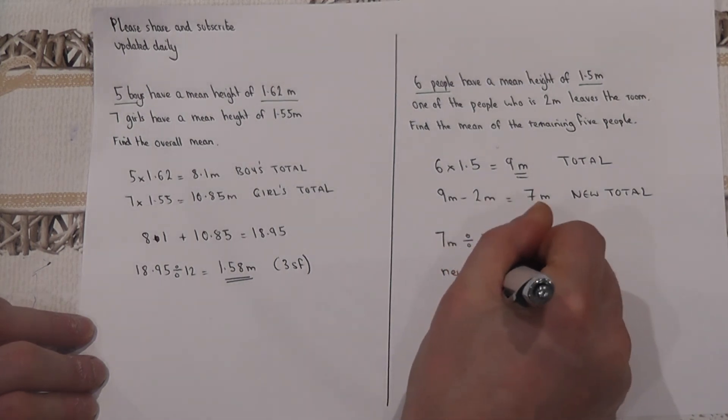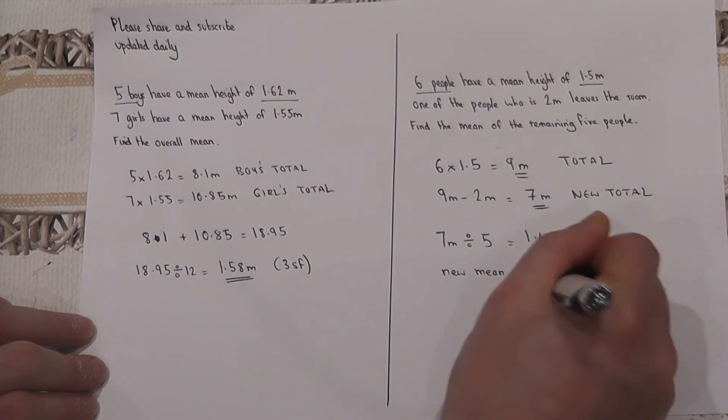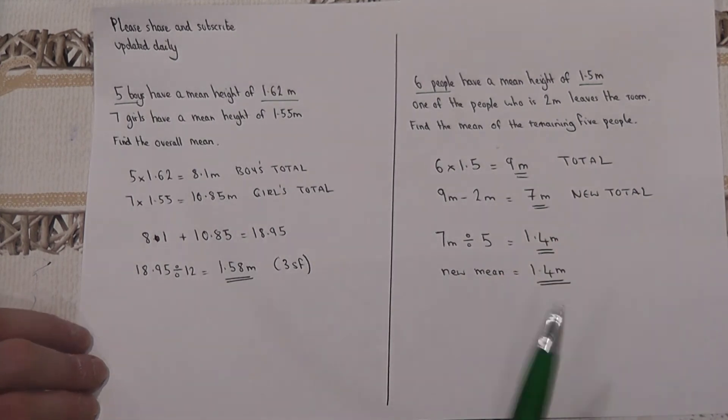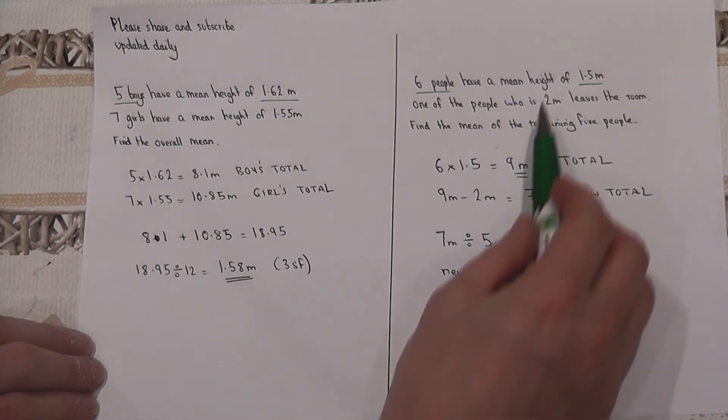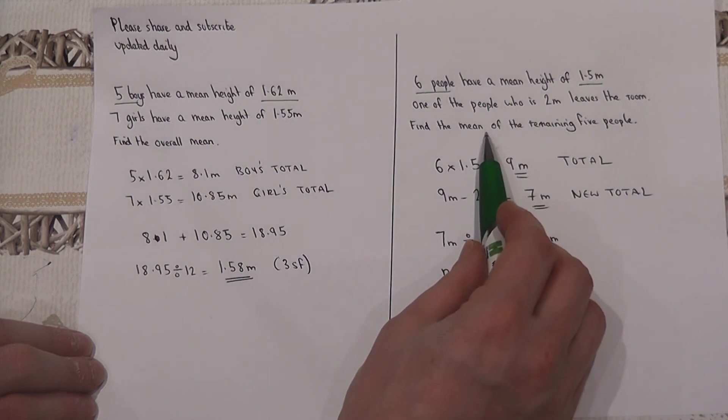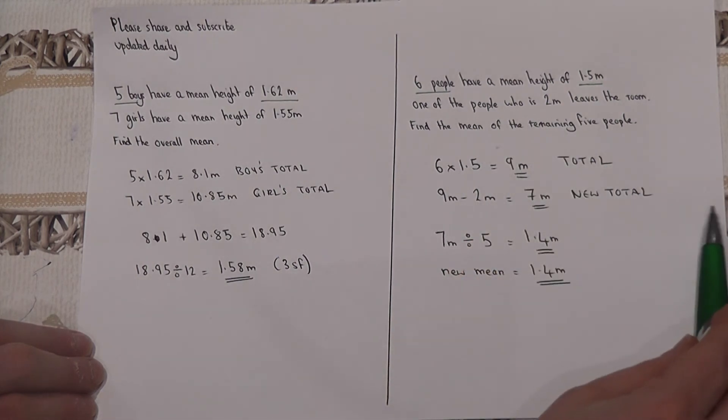So again we found the total, we took away the two meters, and we then divided by five because there were only five people left in the room.